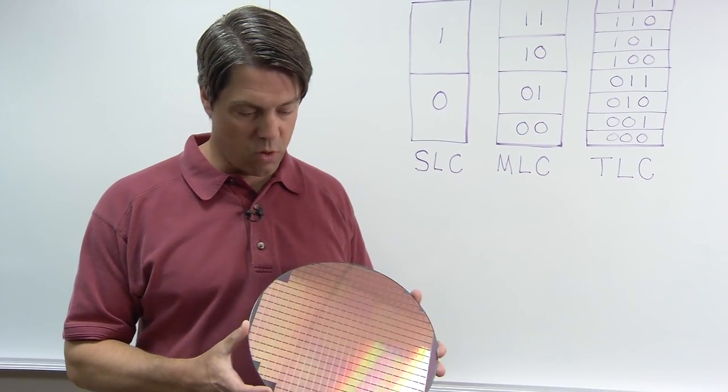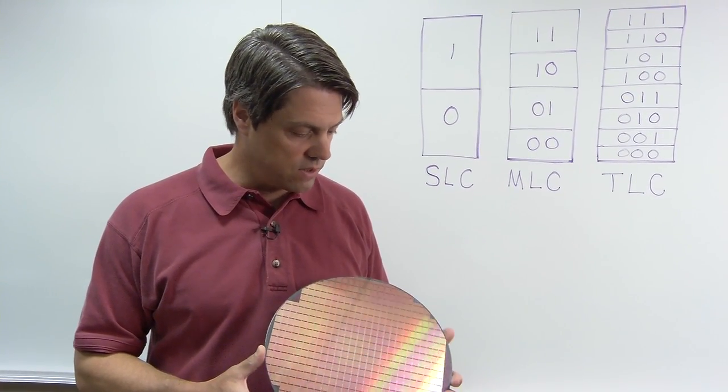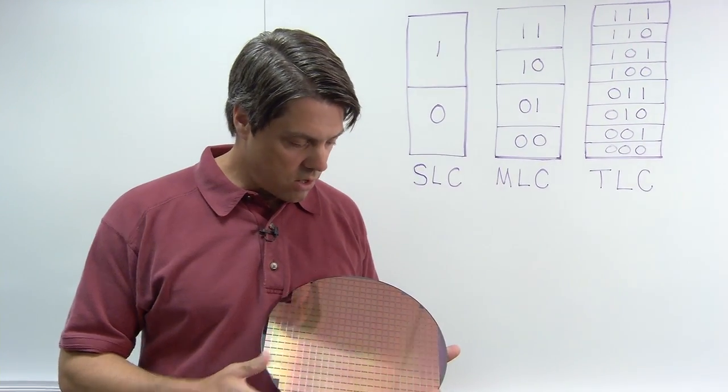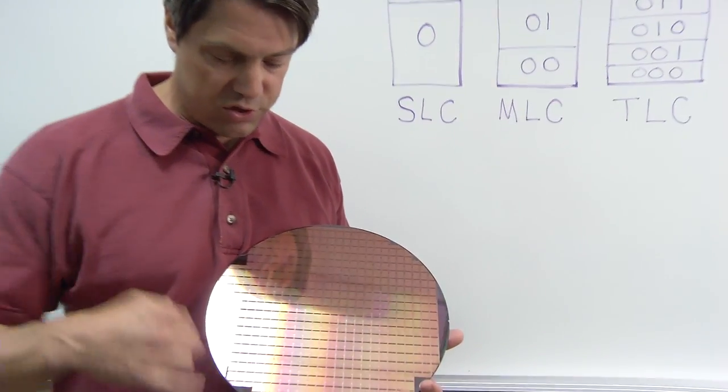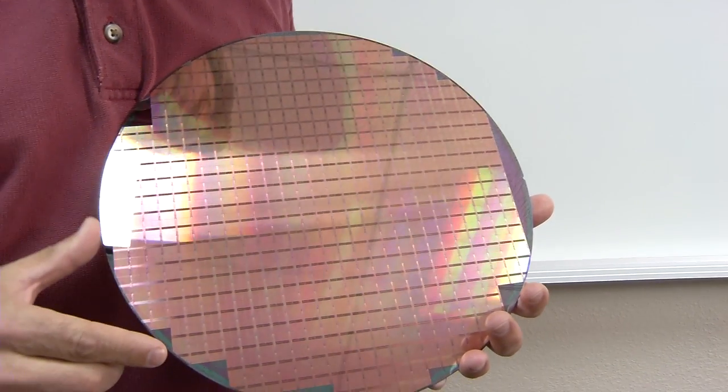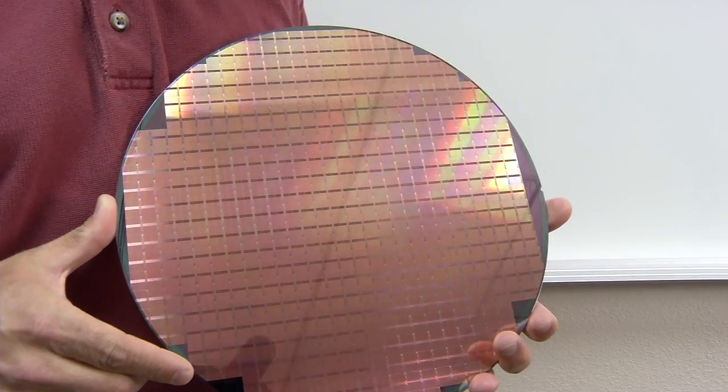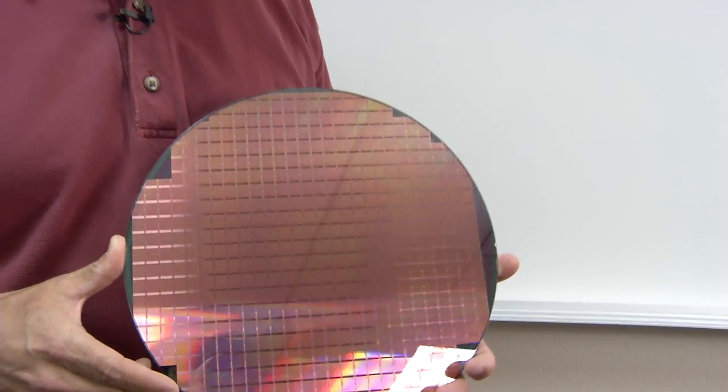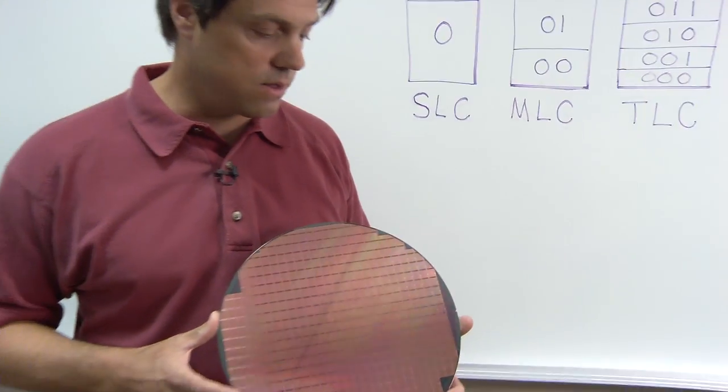And this is a silicon wafer that we produce in our fabs. And I don't know if you can see it very well on the video, but on this wafer, there are hundreds of these individual rectangles, which are about the size of my fingernail. One of those rectangles is the 64 gigabit TLC die that we're producing.